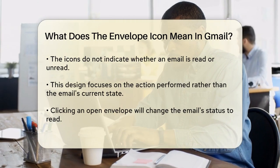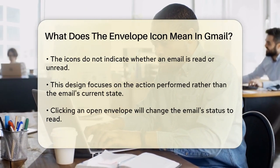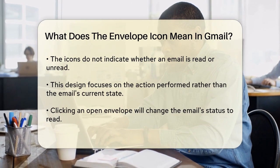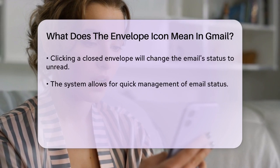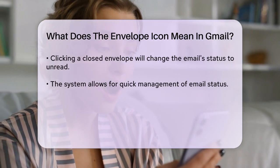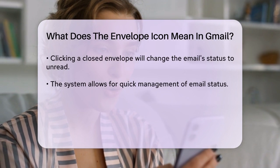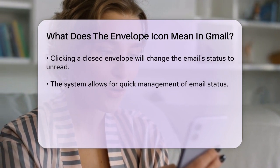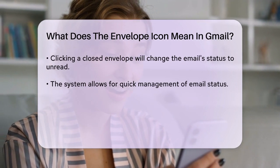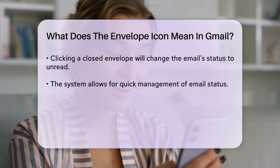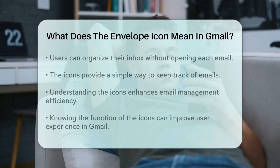On the other hand, a closed envelope icon indicates that clicking on it will mark the email as unread. This design choice is more about the action the button will perform rather than the current status of the email. So if you see an open envelope and click on it, the email will be marked as read, and if you see a closed envelope and click on it, the email will be marked as unread. This system helps you quickly manage the status of your emails without having to open them first.